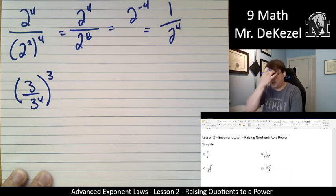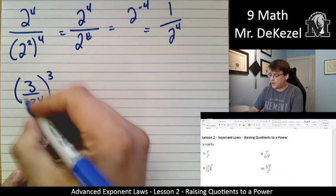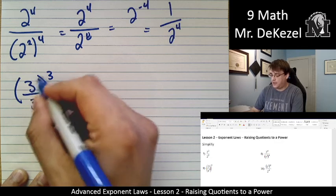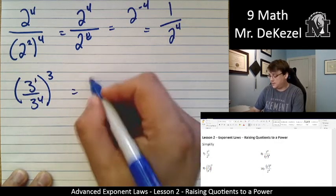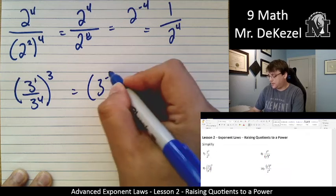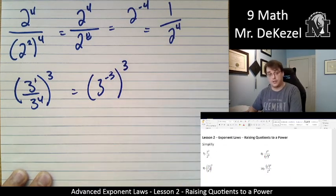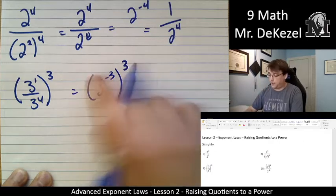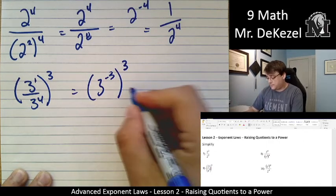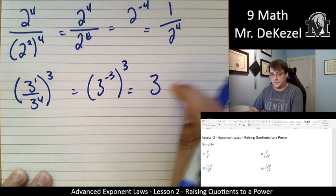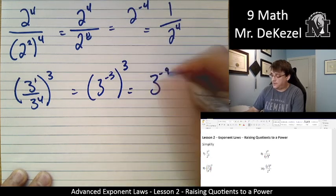We have 1 minus 4, so that is 3 to the power of negative 3, all to the power of 3. We can go ahead and then multiply these two exponents. 3 to the power of negative 3 times 3, so that's 3 to the power of negative 9.